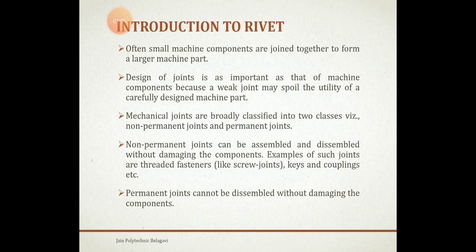In steel structures such as roof trusses, boiler shells, ship building, etc., the various members which constitute the structure are connected to one another by means of rivet joints. Mechanical joints are broadly classified into two classes: non-permanent, for example fasteners, and permanent, for example rivets. This is the basic introduction to rivet joints.